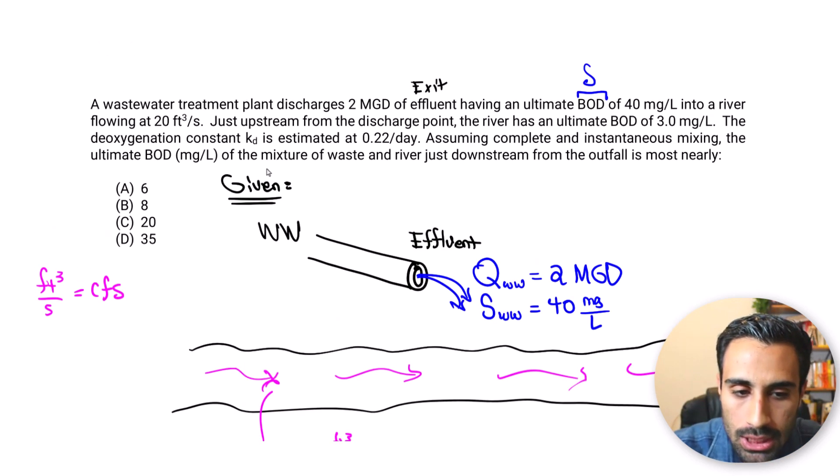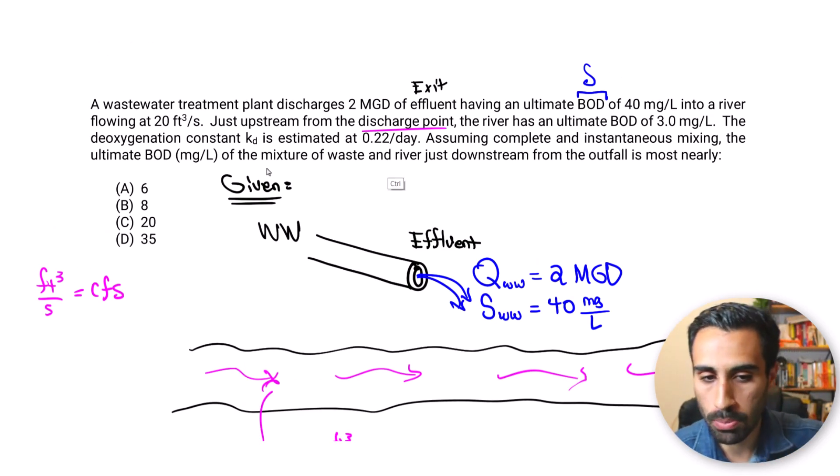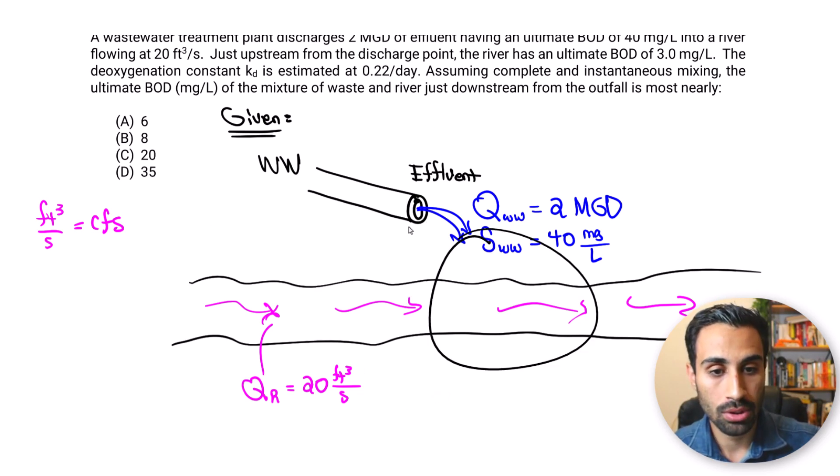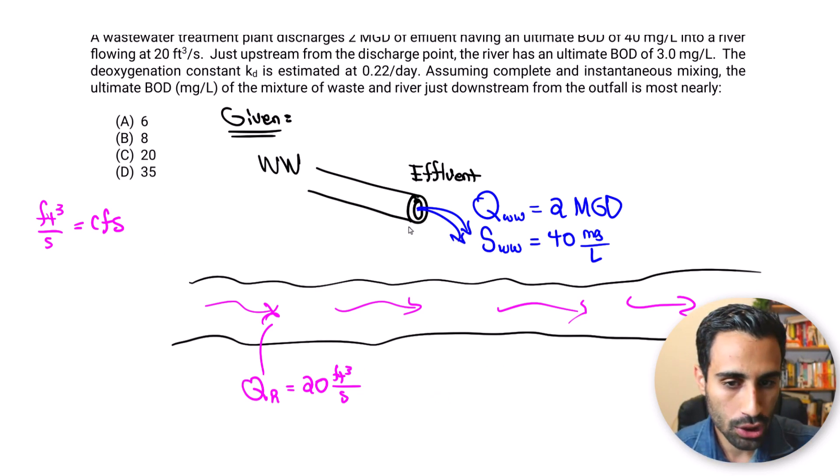Then we're told just upstream from the discharge point. Just upstream from the discharge point, when they say upstream, the discharge point is where? Here. This is where we discharge that wastewater. Upstream would be up to that. So up here, this is upstream. This is downstream to the discharge. Again, discharge point is here. This is upstream. This is downstream.